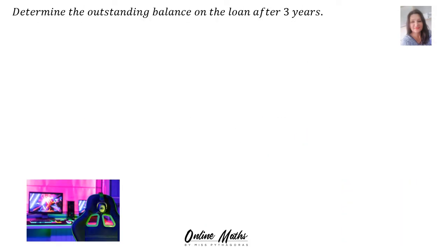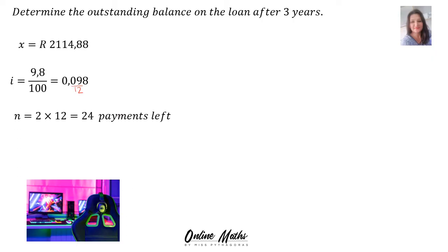For the second part of the sum: determine the outstanding balance on the loan after 3 years. Our X, calculated in the previous sum, is R2,114.88. I is 0.098, and inside the sum we divide by 12 because it's monthly payments. N will be 2 years — the payments left after 3 years of the total 5-year loan — times 12 because it's monthly payments. So N is 24 payments left.